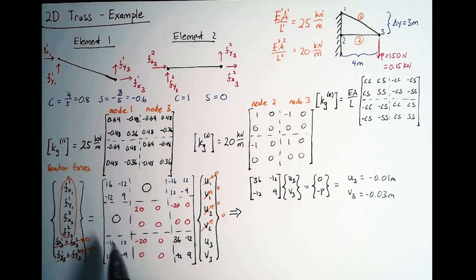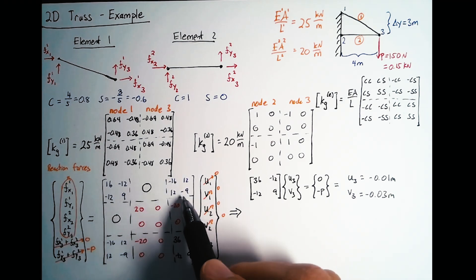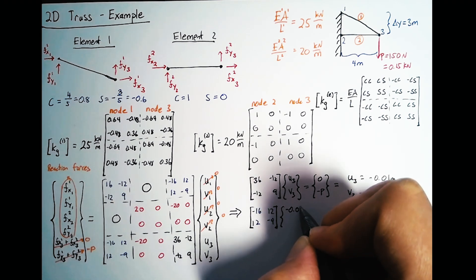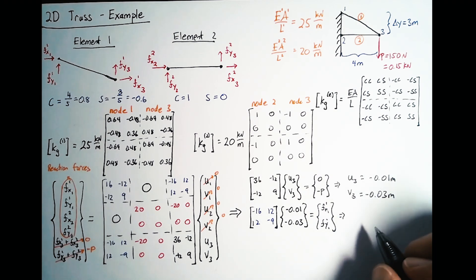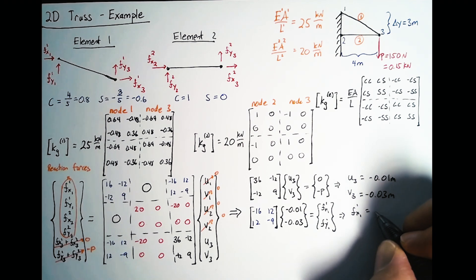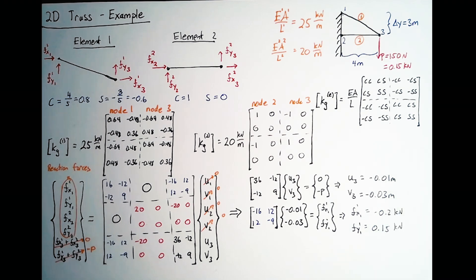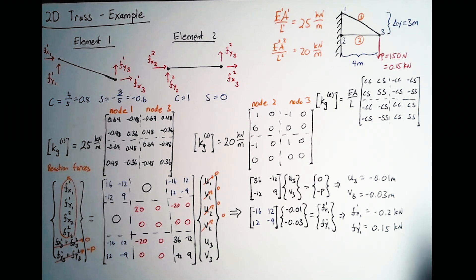Now we can take these values to calculate the reaction forces on the wall. To see what effect U3 and V3 have on FX11 and FY11, we multiply by this matrix. We take that blue submatrix, multiply by the known values of U3 and V3, and that equals FX11 and FY11. Doing that quick math, we end up with negative 0.2 kilonewtons for FX11 and positive 0.15 kilonewtons in the y direction. You'll notice that FY11 is exactly the same value as P, but this is in the positive y direction while P is negative. Node 1 is supporting all of the force from P.